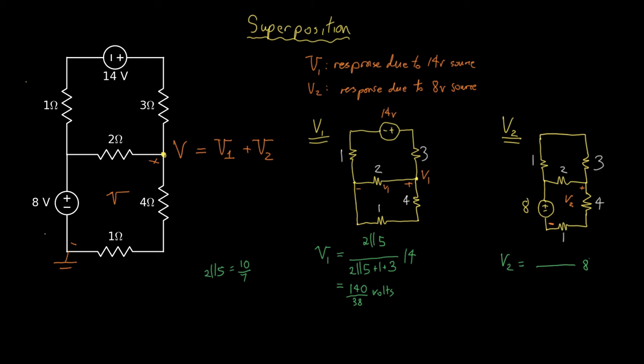In this case, the voltage is across the 1 plus 4 ohm resistor, so 5. And in this case, the other resistor is 2 in parallel with 4.